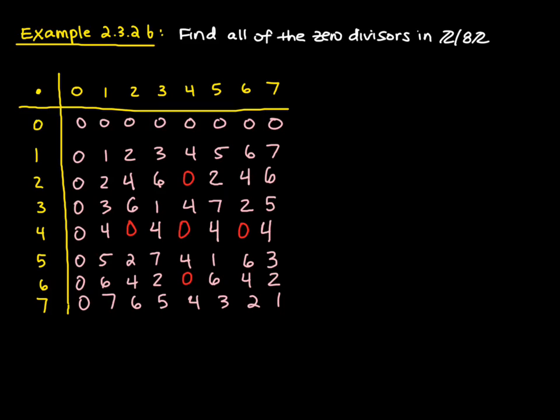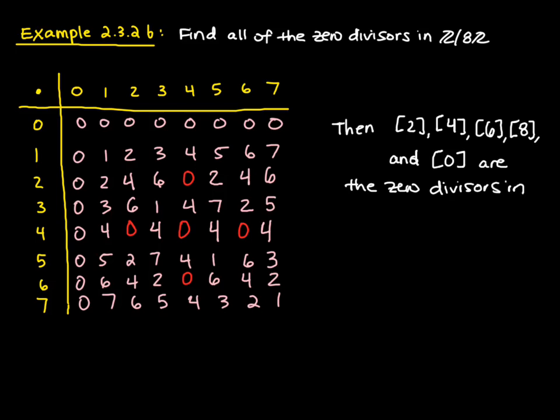We've filled in our table. Looking at it, we have five areas where the product of two non-zero numbers equals zero. This tells us that 2, 4, 6, and 0 are the zero divisors in Z mod 8Z. Zero is always a zero divisor because any non-zero element times zero gives you back zero.